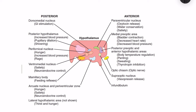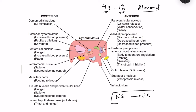The hypothalamus is extremely small, only 4 grams in weight, which is basically 1% of brain weight. It is the size of an almond but controls many important functions of the body. It basically connects the nervous system with the endocrine system and regulates a lot of body functions.